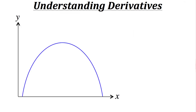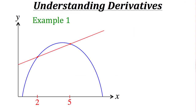Here we can see the parabolic curve of a quadratic function. Now let's say we want to find the average rate of change of the function between two points — from x equals 2 to x equals 5. To do that we would draw a line connecting those two points together. A line that intersects two points along a curve is known as a secant line. To find the average rate of change between these two points we just need to find the slope of that secant line.